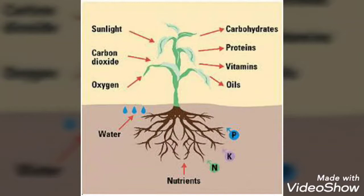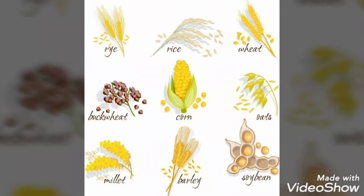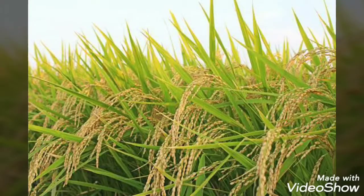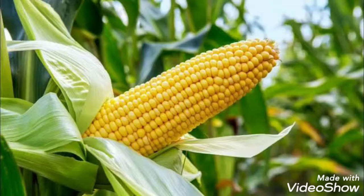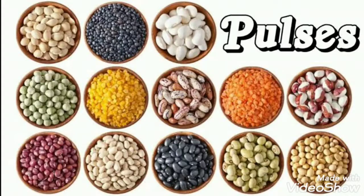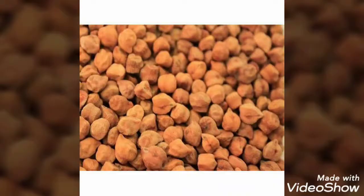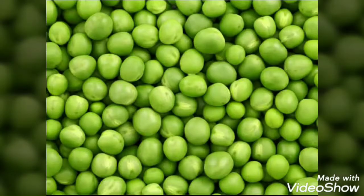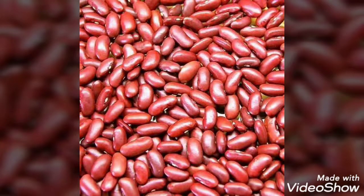Plants give us cereals such as rice, wheat, maize, barley, etc. Seeds of certain plants that can be eaten are called pulses. Examples: gram, pea, kidney beans, etc.